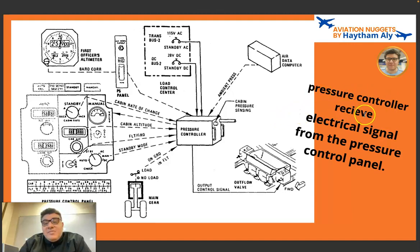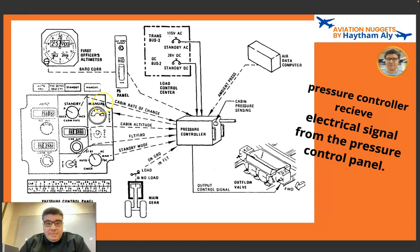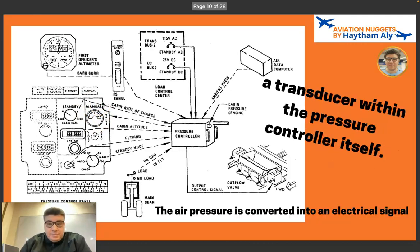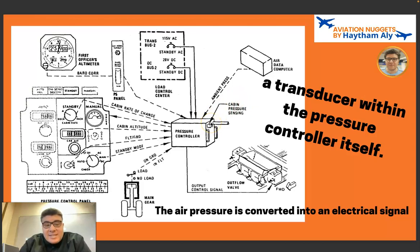The pressure controller receives electrical signals from the pressure control panel. For example, if the pilot selects manual control of the outflow valve, he will open and close it manually from the pressure control panel. Additionally, there is a transducer within the pressure controller itself for cabin pressure sensing — it converts air pressure into an electrical signal to sense cabin altitude into the controller. The controller also receives ambient pressure from the air data computer (ADIRU).